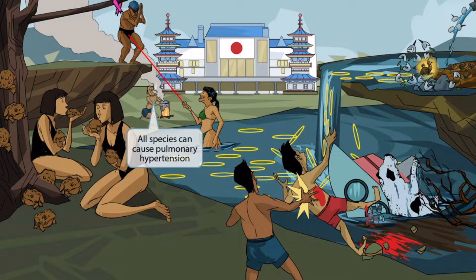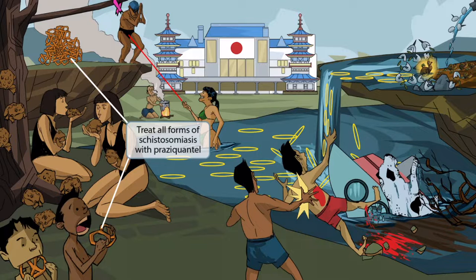Chronic infections from any of the schistosoma species can also cause pulmonary hypertension. A kid inhaling steam from a pressure cooker represents pulmonary hypertension — the attention to the lungs plus the pressure from the cooker help reinforce this. The pressure cooker is on the ground level with mansoni and japanicum, and the steam rising to the cliff where the hematuria diver stands indicates that schistosoma hematobium can also cause pulmonary hypertension. Pretzels brought by the kids represent praziquantel, which is the treatment for all three schistosoma species.